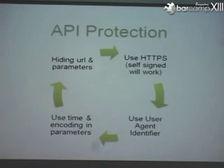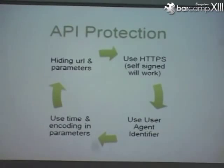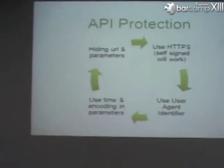If you don't want that level of protection, there are simpler techniques to protect your API. Use HTTPS - you can use a self-signed certificate, no need to pay for one. Hide your URL parameters - don't do GET calls, always use POST. Use time-encoded parameters: pass a timestamp in the API, encrypt it, and on your server check that it's within five or six minutes - so if someone gets hold of the complete URL it will only work for two or four minutes. Use user agent identifiers - if you detect a request coming from Mozilla or some unexpected client, just blindly reject it.